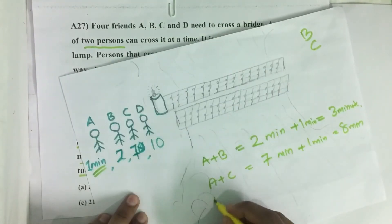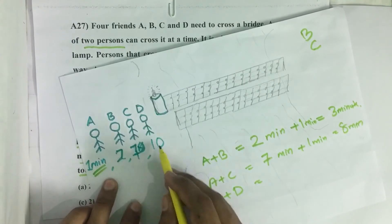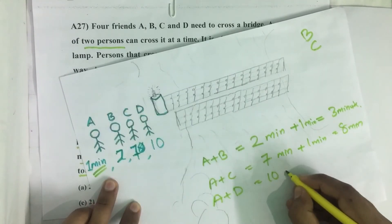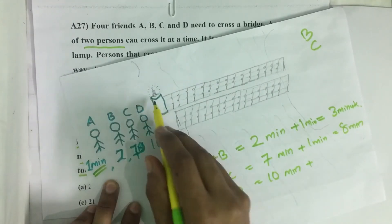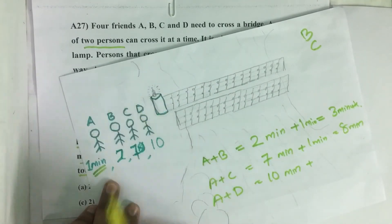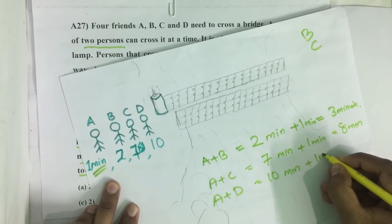Then A plus D, it takes the time of slower person, that is ten minutes. Then he has to come back to keep the lamp where he got it, so he takes one minute.